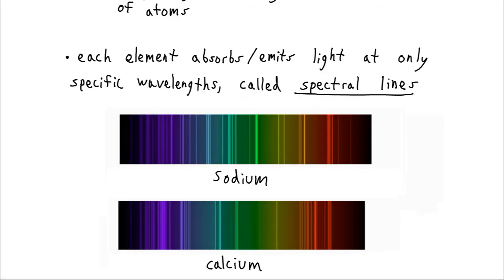We could also shine light through a gas of sodium that was cool, in which case these would be absorption wavelengths. These would be the points where the light would be absorbed and all the rest of the light would be able to pass through.